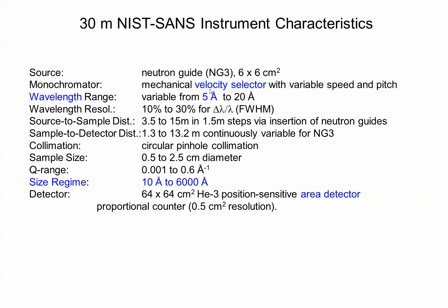This gives you an idea of the scale involved. The characteristics: the velocity selector gives us neutrons between 5 and 20 angstroms. This is in Fourier space, size regime between 10 and 6,000 angstroms,